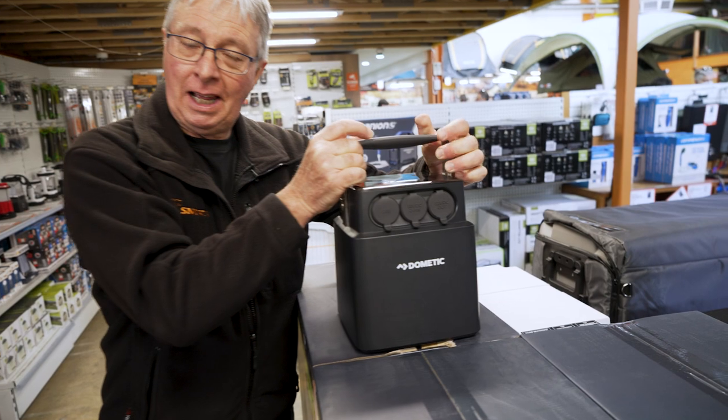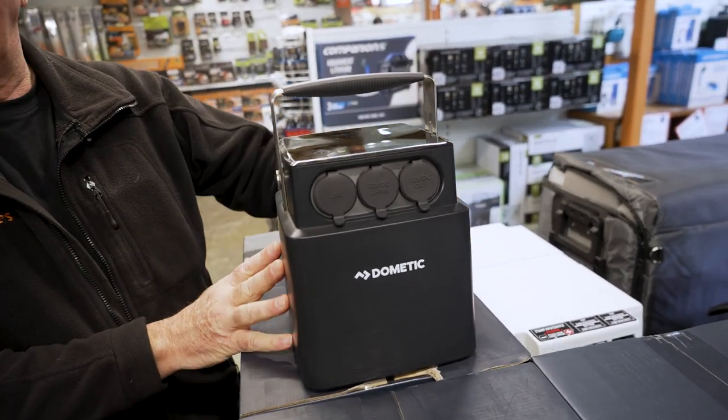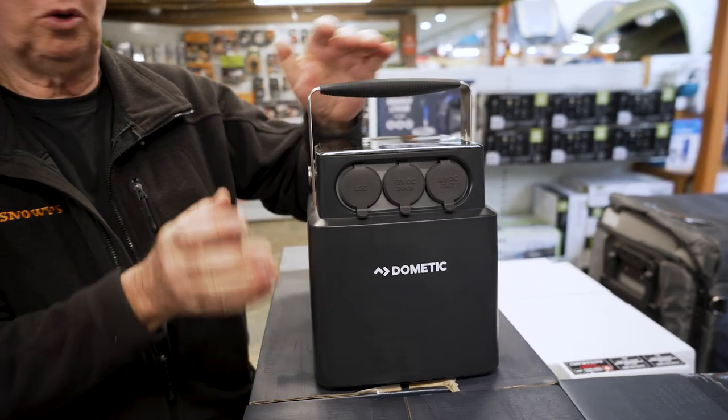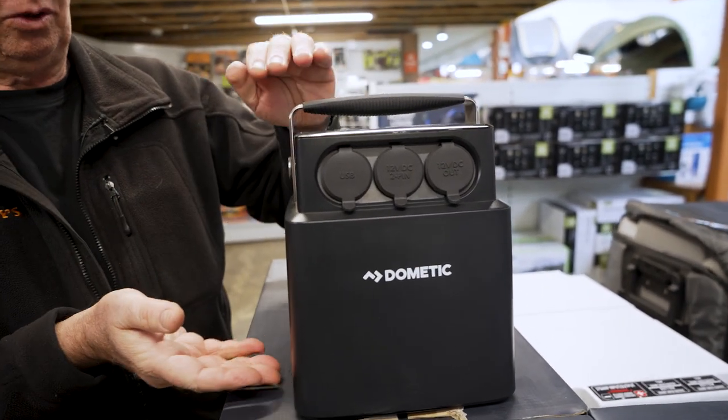This unit comes in at about 7 and a half kilos in weight. It is 19 and a half centimeters by 19 and a half centimeters, 29 centimeters tall, and about 25 centimeters tall with the handle down.